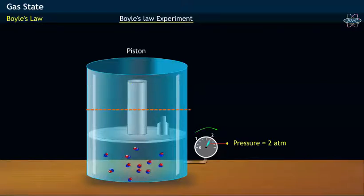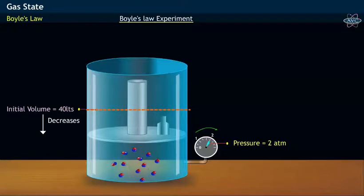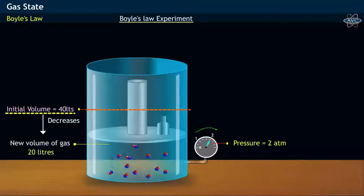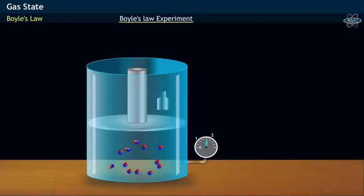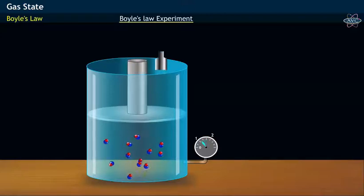During this process, it is observed that the volume of the gas decreases from 40 liters and takes a value of 20 liters. When the weight on the piston is removed, that is, pressure on the gas is decreased to one atmosphere...